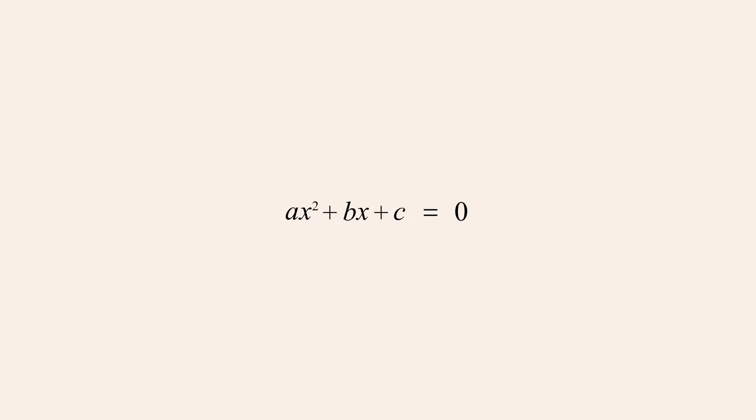Given any general form quadratic equation, the first step is to eliminate the x-squared coefficient. This can always be accomplished by dividing both sides of the equation by that coefficient. For example, to eliminate the x-squared coefficient in the equation 4x-squared plus 3x plus 8 equals 0, we divide both sides of the equation by 4. 4 divided by 4 is 1, 8 divided by 4 is 2, and 0 divided by 4 is 0. The x-squared coefficient of 1 can now be eliminated.